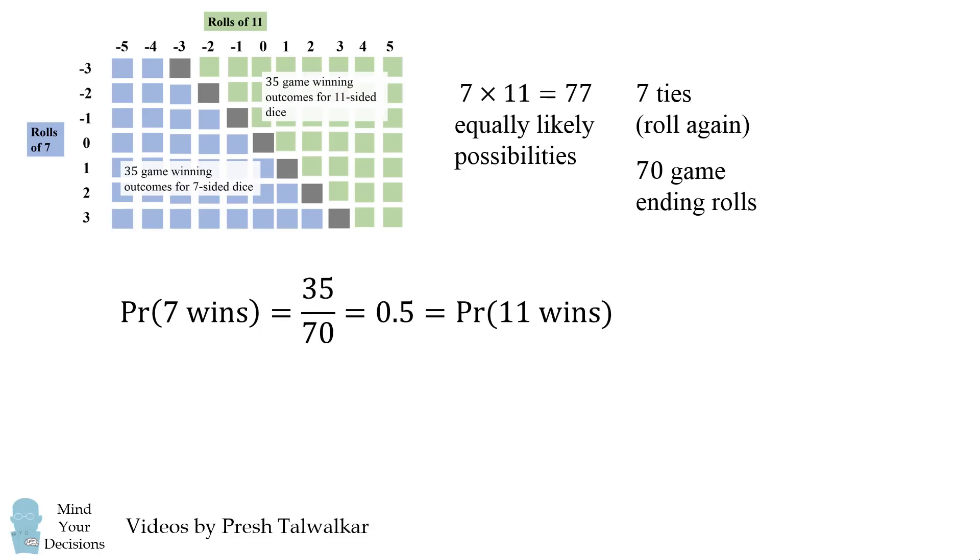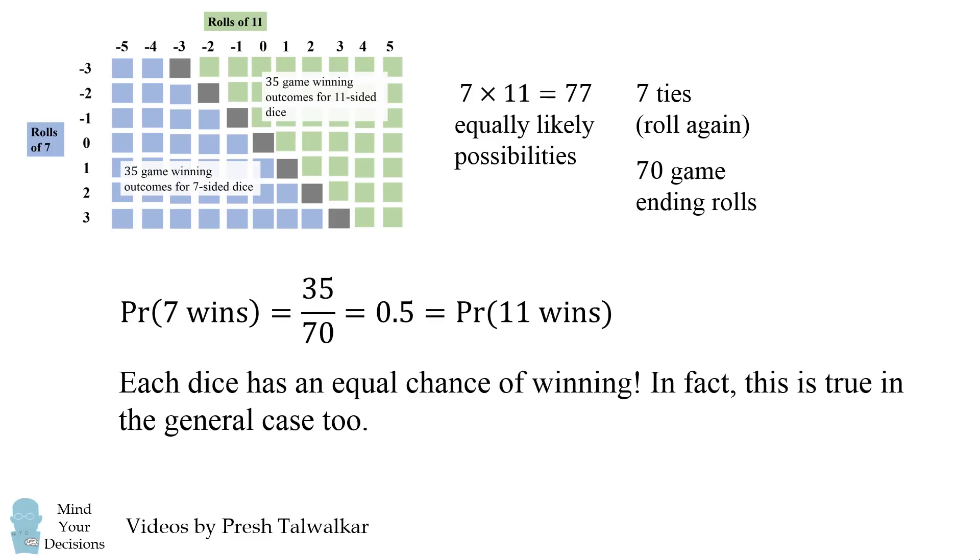and that's exactly the same as the probability that the 11-sided dice wins, and 35 over 70 is equal to 50 percent. So the two are equal to each other. Each dice has an equal chance of winning.